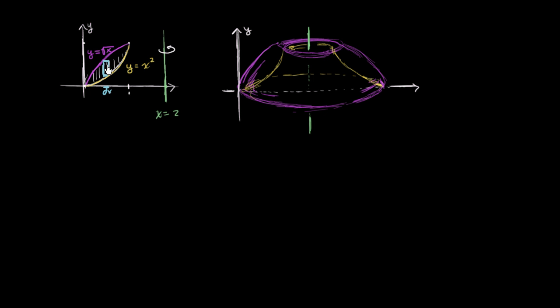And its height is the difference of these two functions. And so if I were to draw it right over here, it would look something like this. So it would look something like that. And then it is a shell. It's kind of a hollowed out cylinder. So it would look something like this. It would look something like that. Just like that.